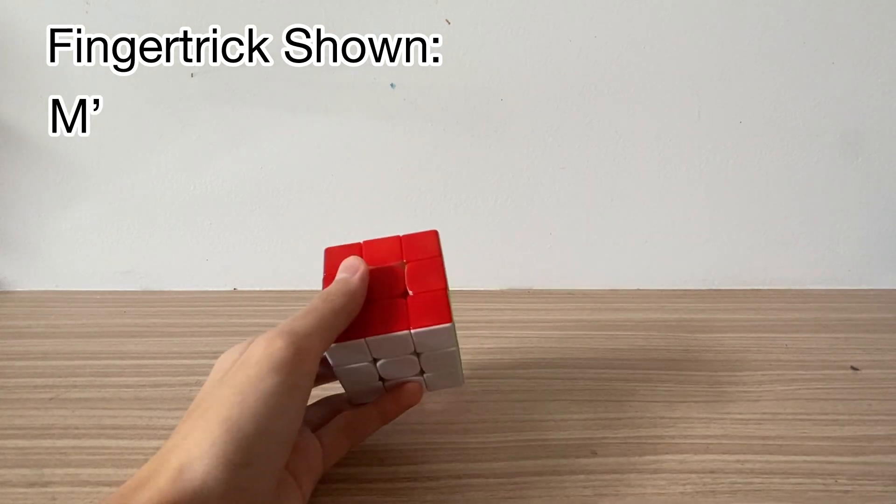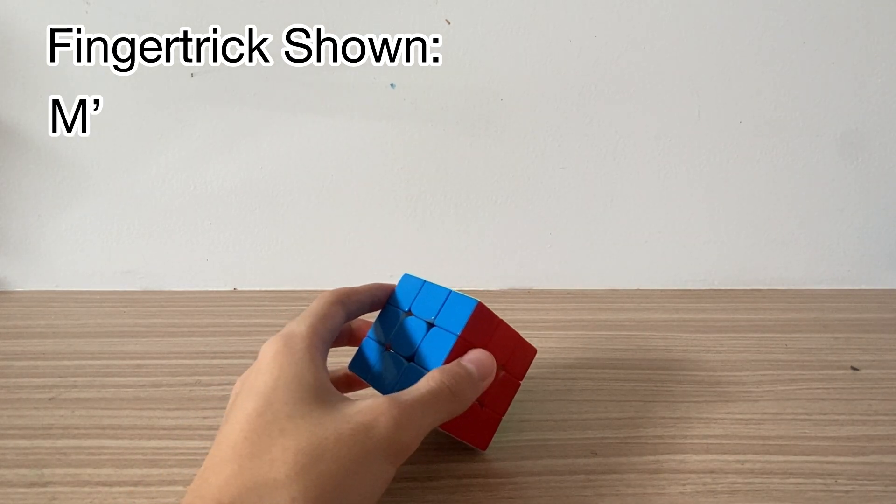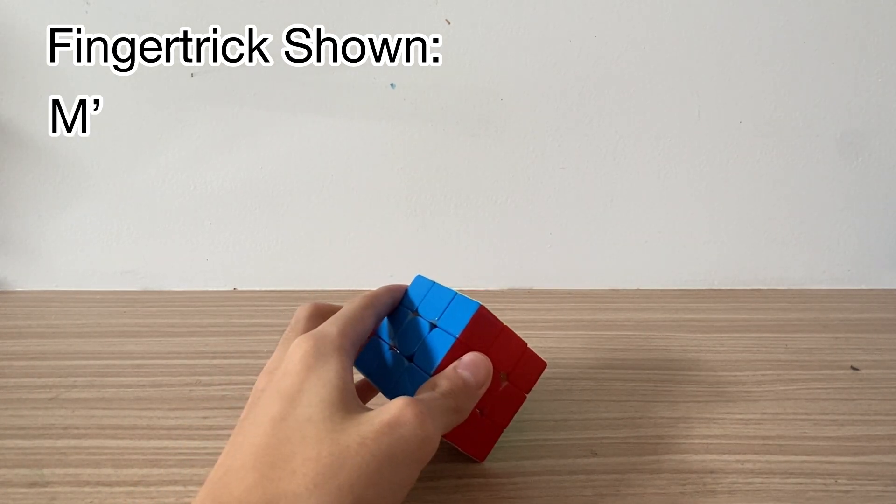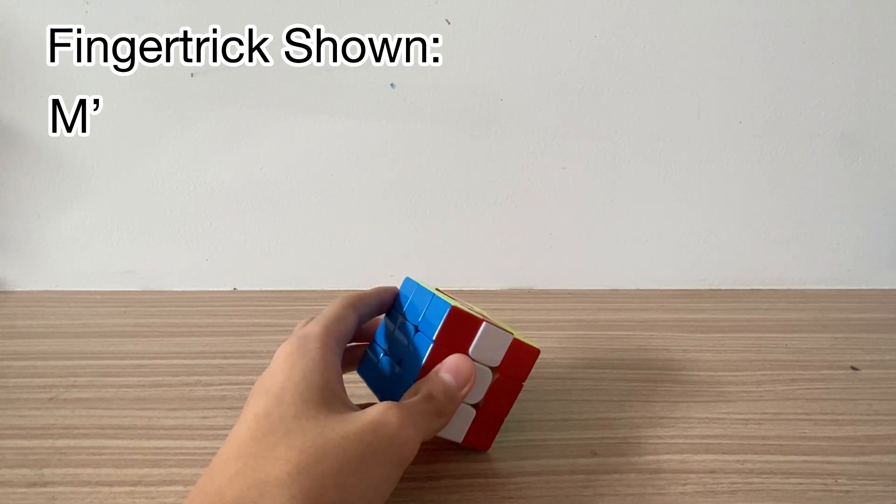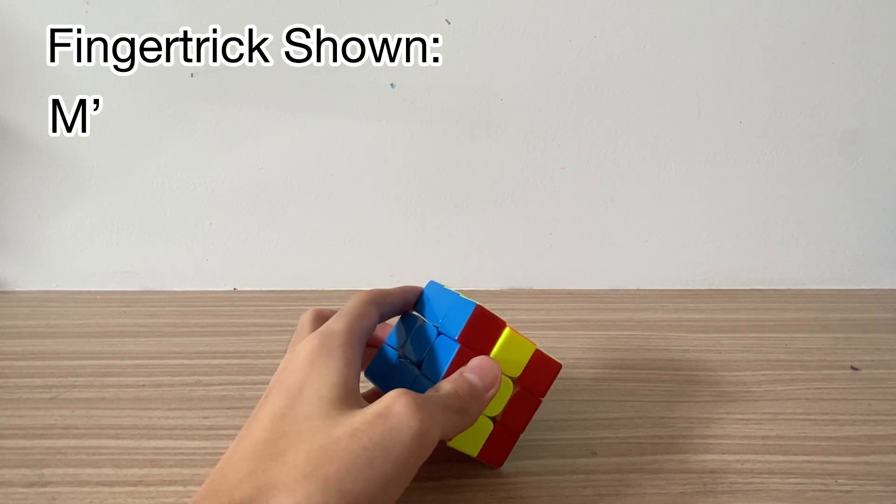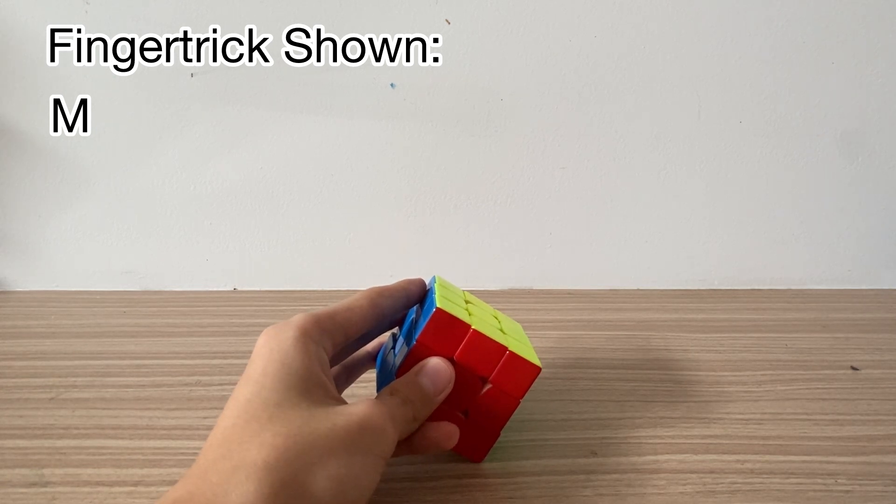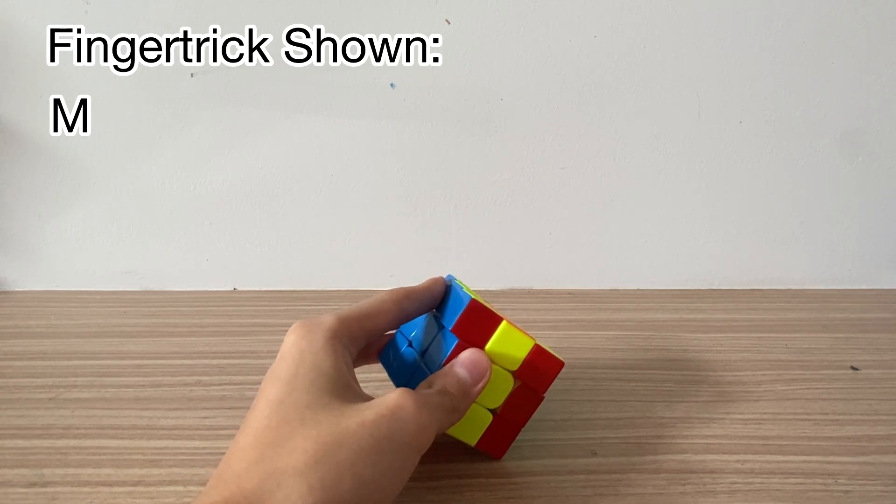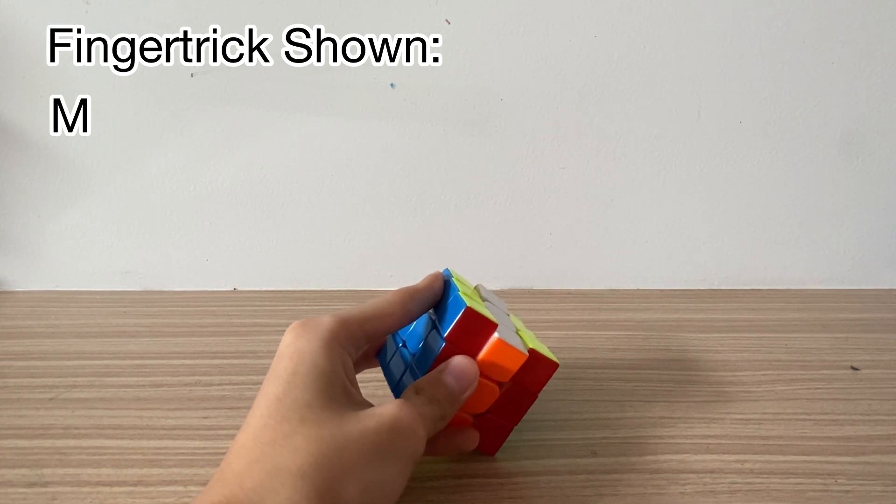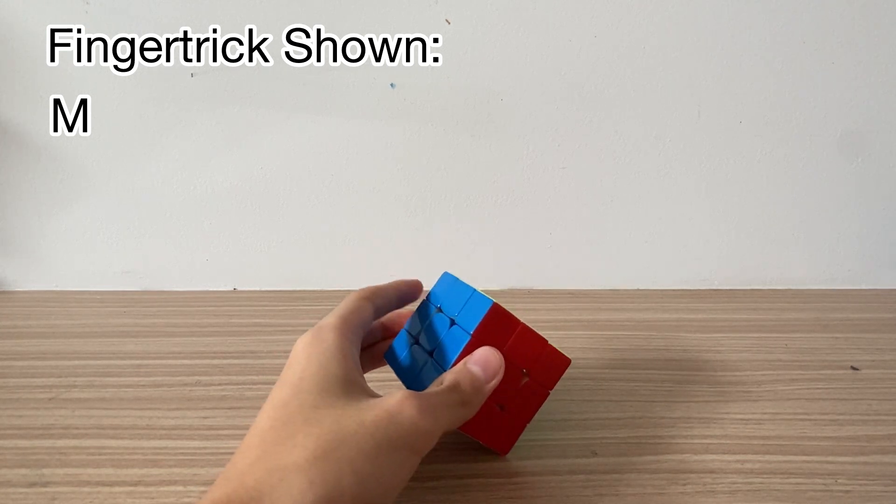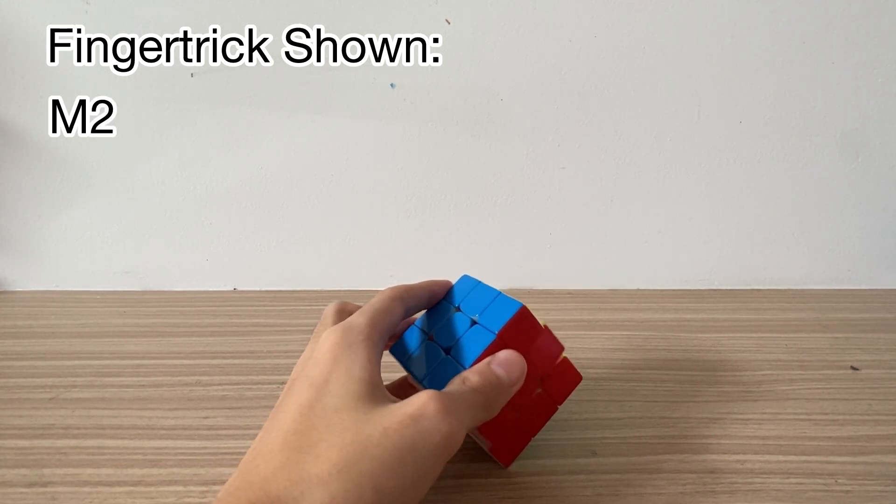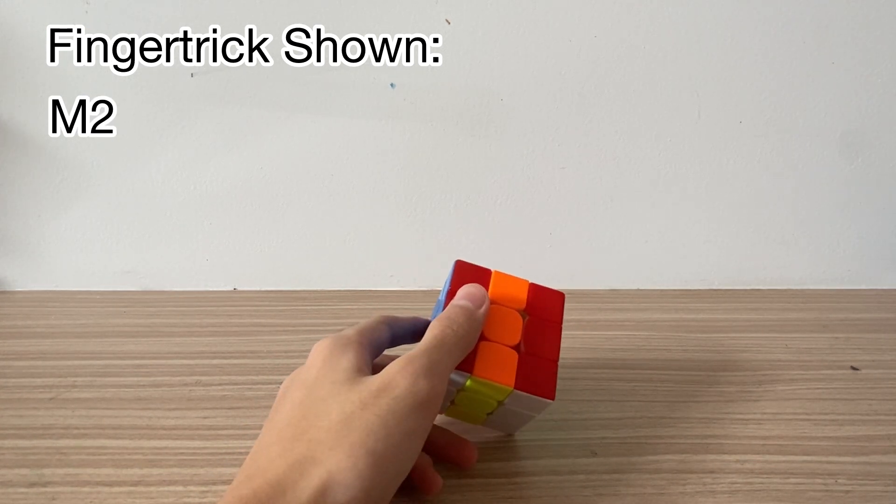The M layer, you do with your pinky like this while table abusing. And for M, you do the same thing like R prime, you do this. It's very awkward because it's very uncommon. And for M2, you do R2, but with the ring finger.